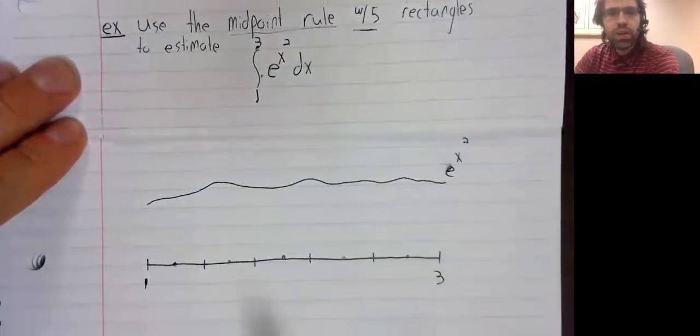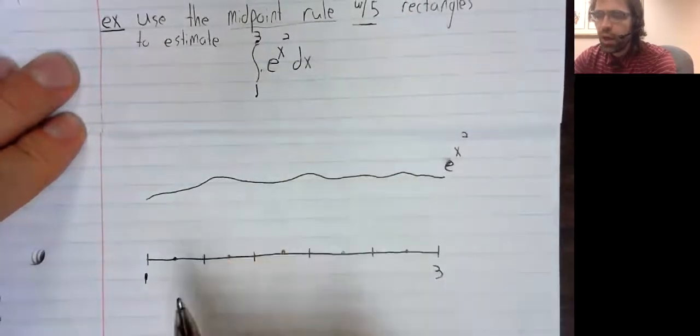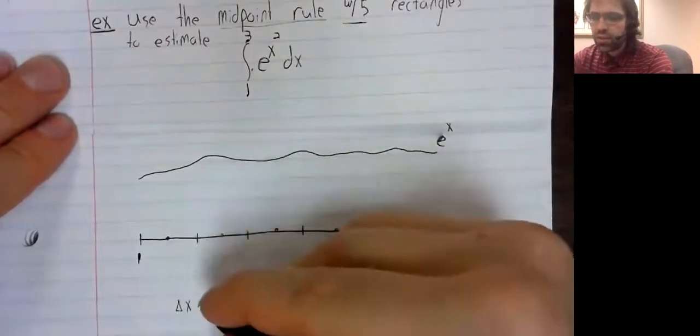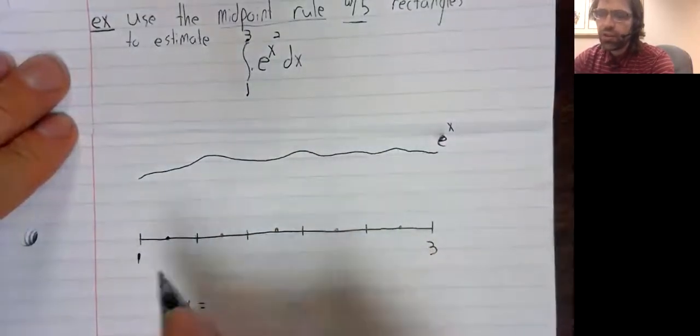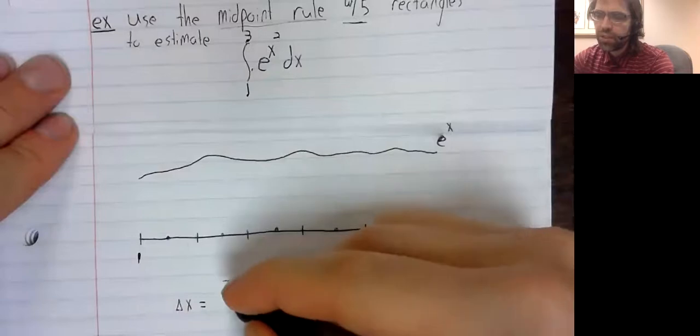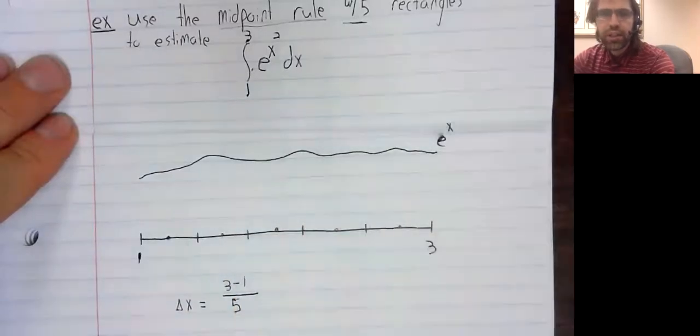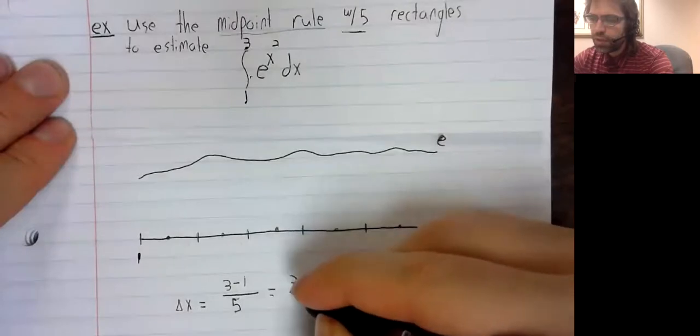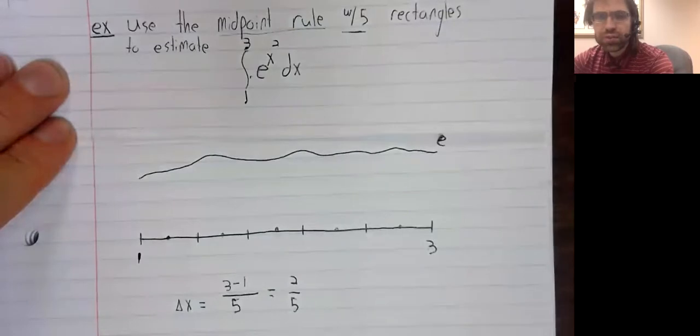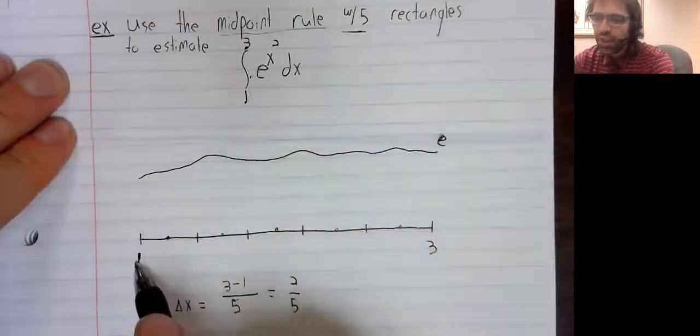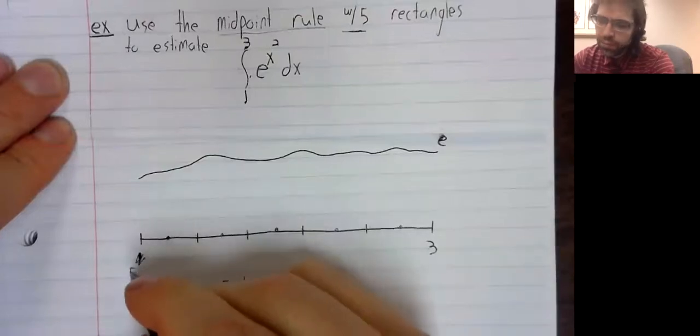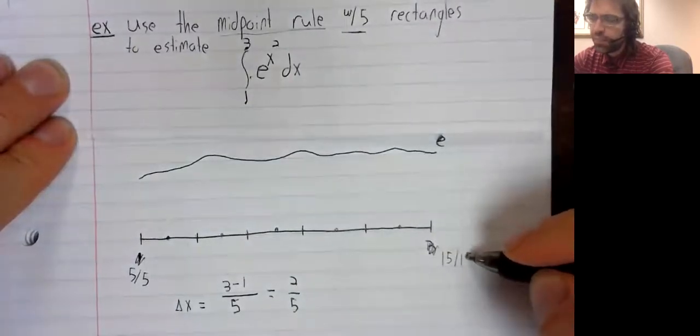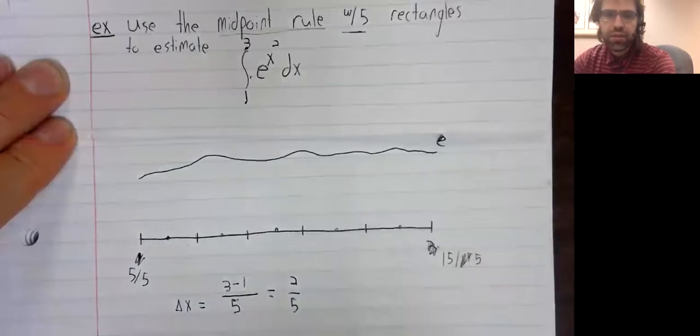What are these pieces? Well, the length of any one of these five intervals is delta x equals the length of the interval B minus A divided by the number of rectangles. So, two-fifths, and that's got a common denominator. We'll rewrite one as five-fifths and three as fifteen-fifths.